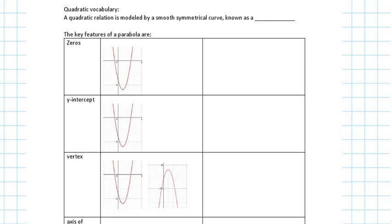Today we're going to start looking at the different features of a parabola. We said yesterday that quadratics — what's special about quadratics? When I look at an equation, how do I know it's quadratic? Degree 2. So there's a square on top of the x, which is the highest degree.